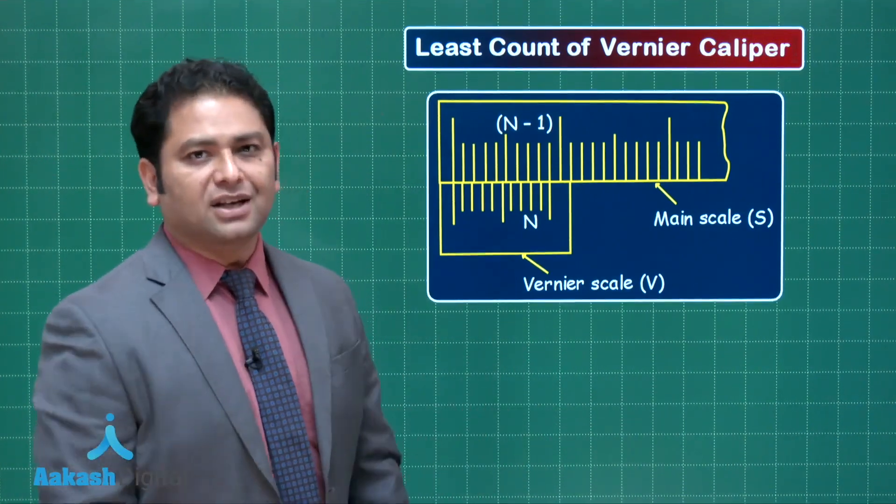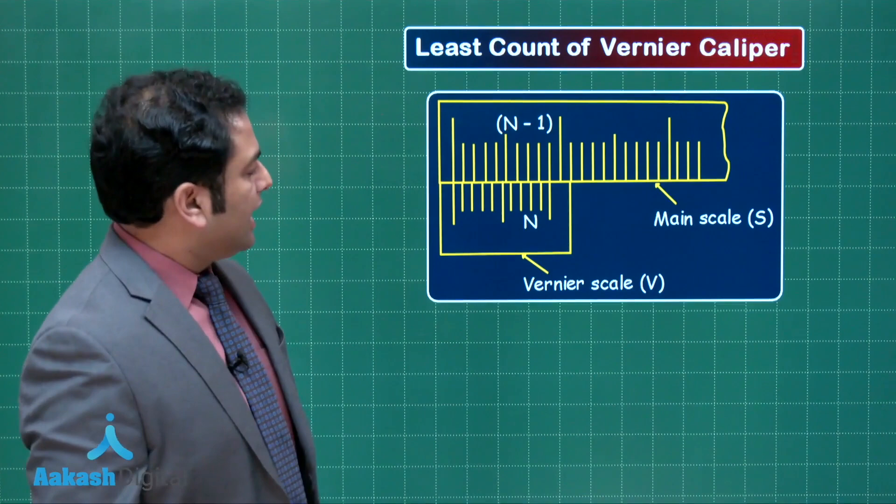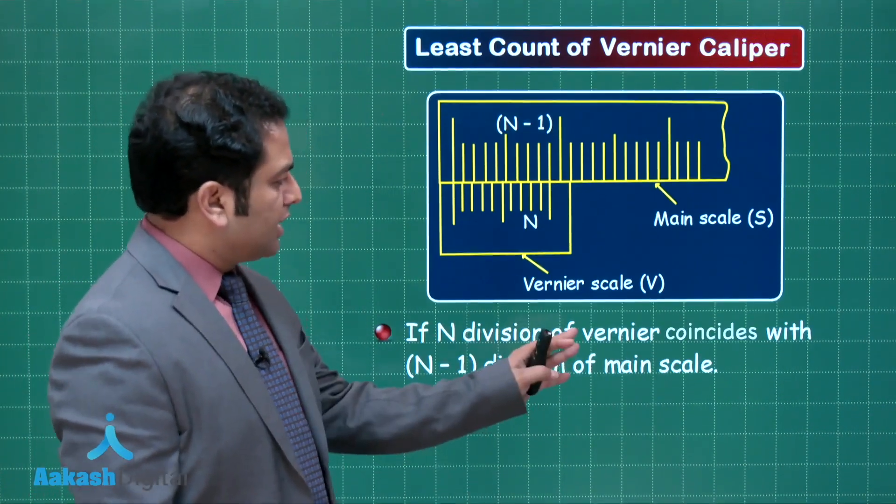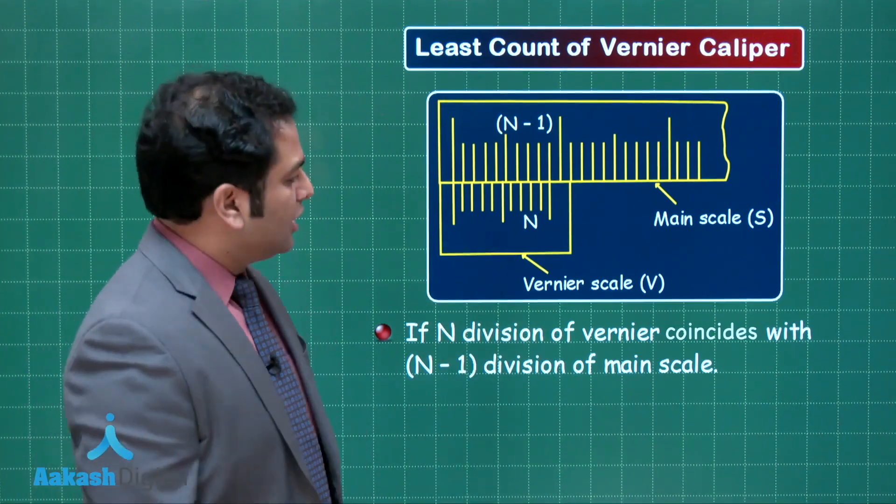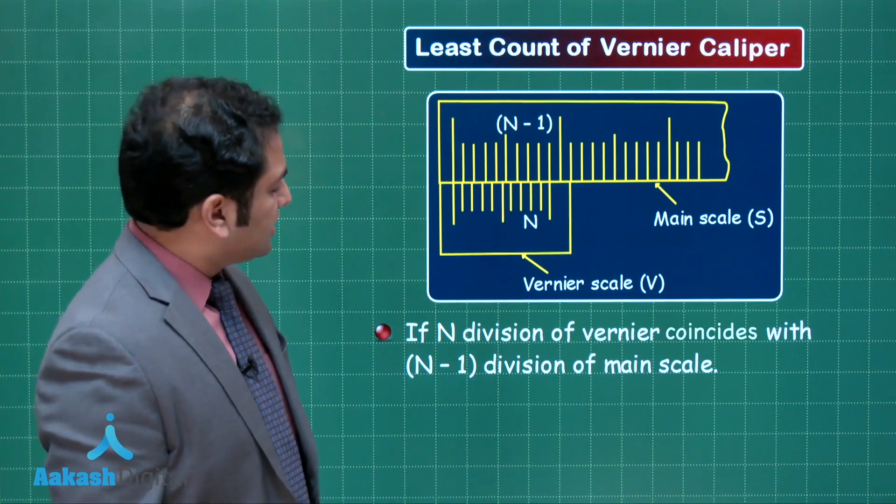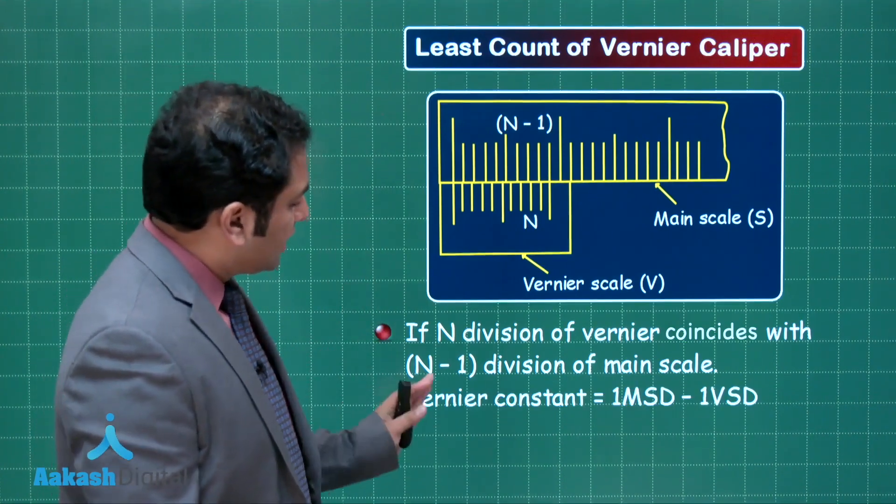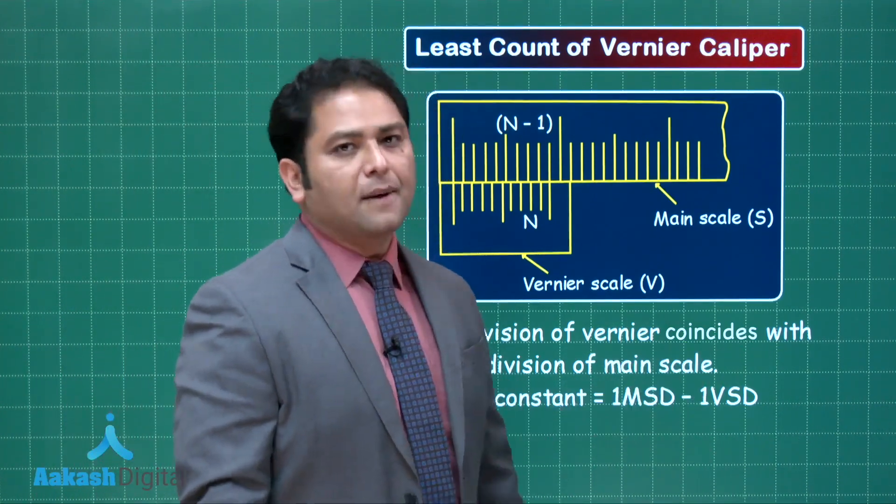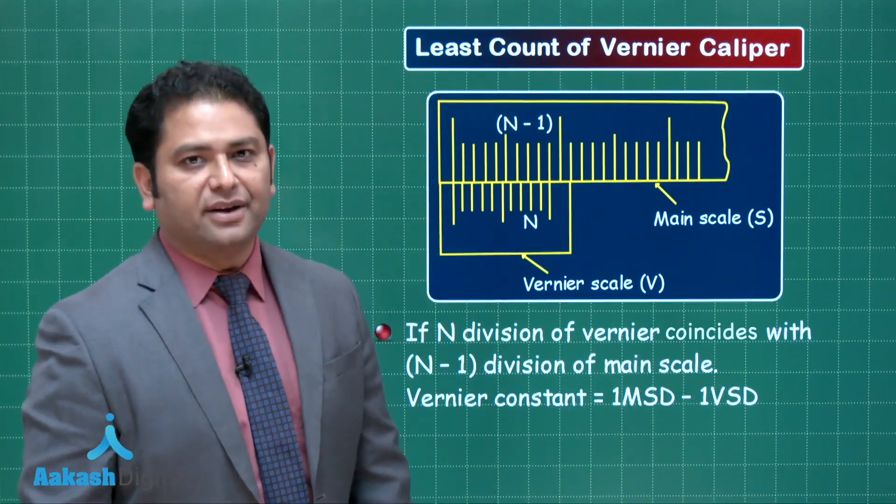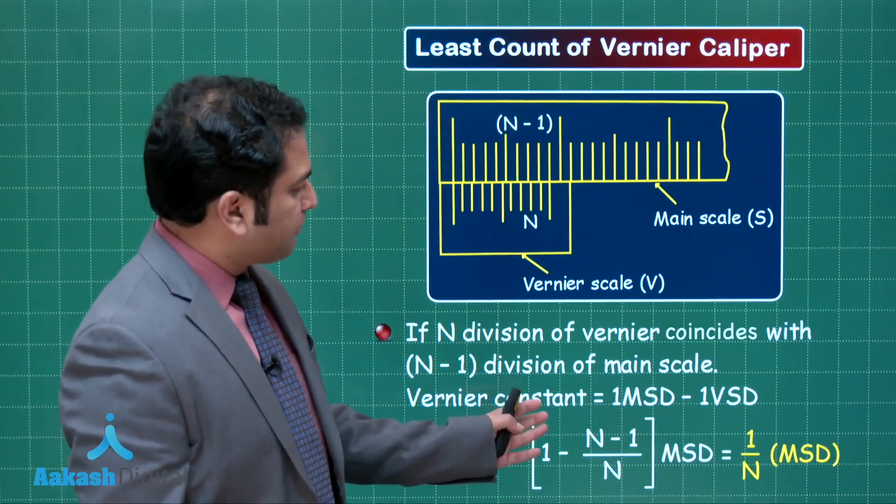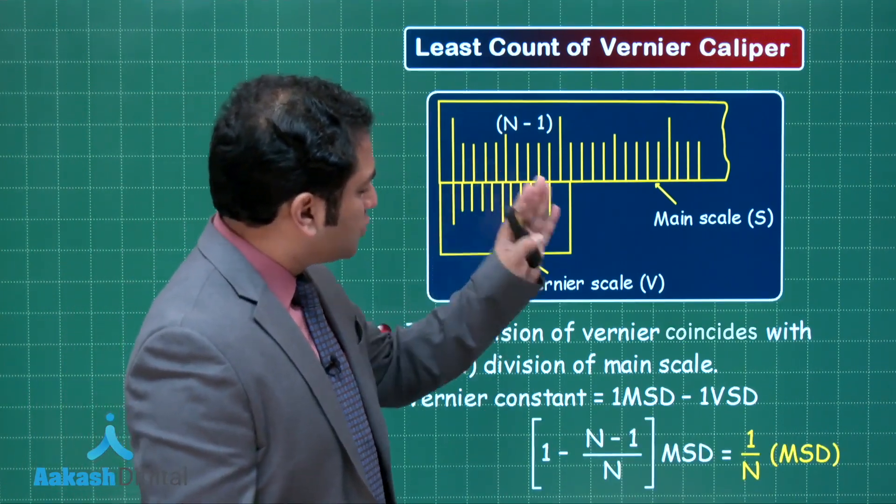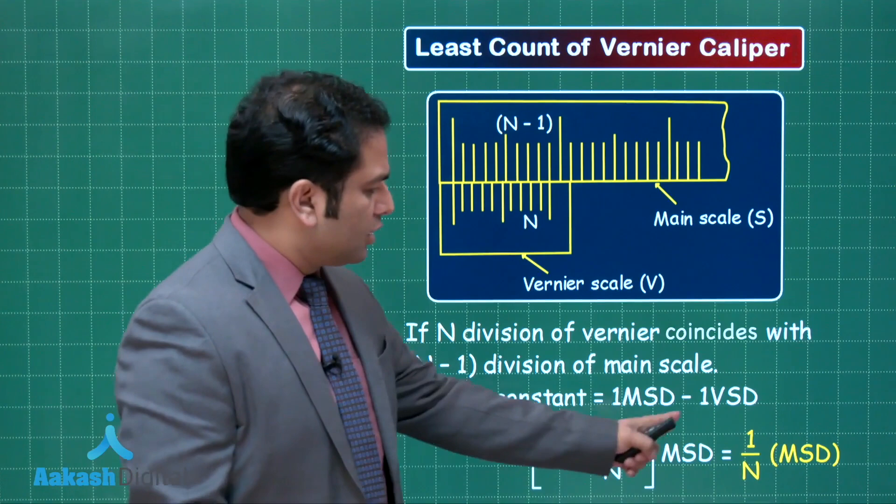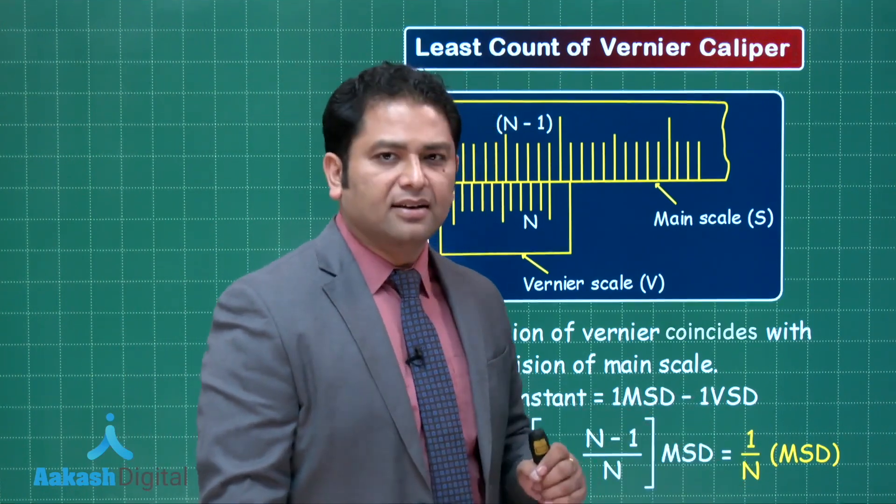How do we define the least count? If the n division of Vernier scale coincides with n-1 of the main, this is how we define the Vernier constant or the least count. By definition: one main scale division minus one Vernier scale division. Since n-1 main equals n Vernier, you get 1/n MSD.